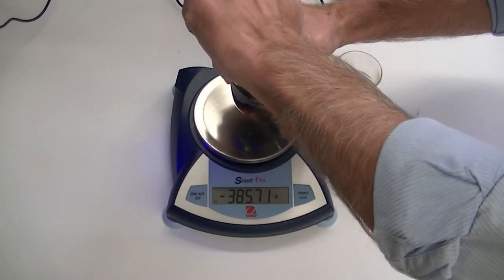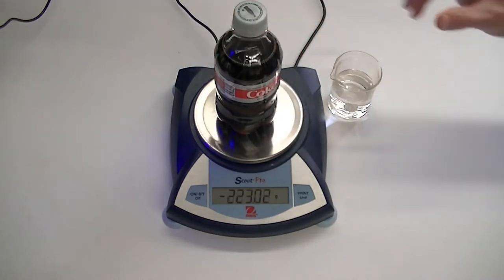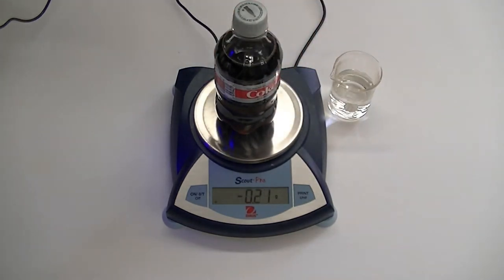Okay, here goes. Did you hear that hiss? That was the gas escaping. Okay, now let's find out what the mass of the bottle is. Well, it looks like 0.21 grams of carbon dioxide escaped.